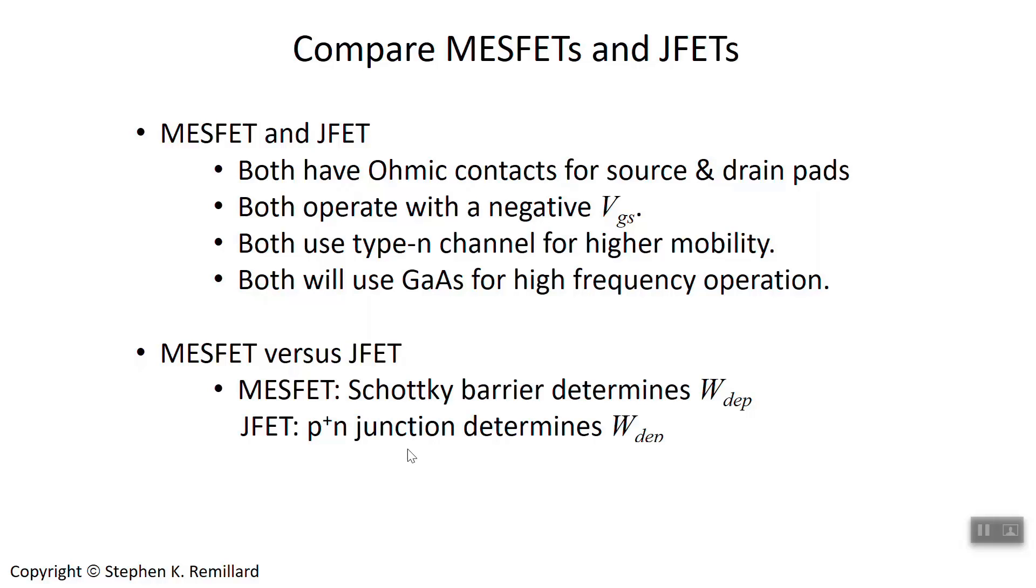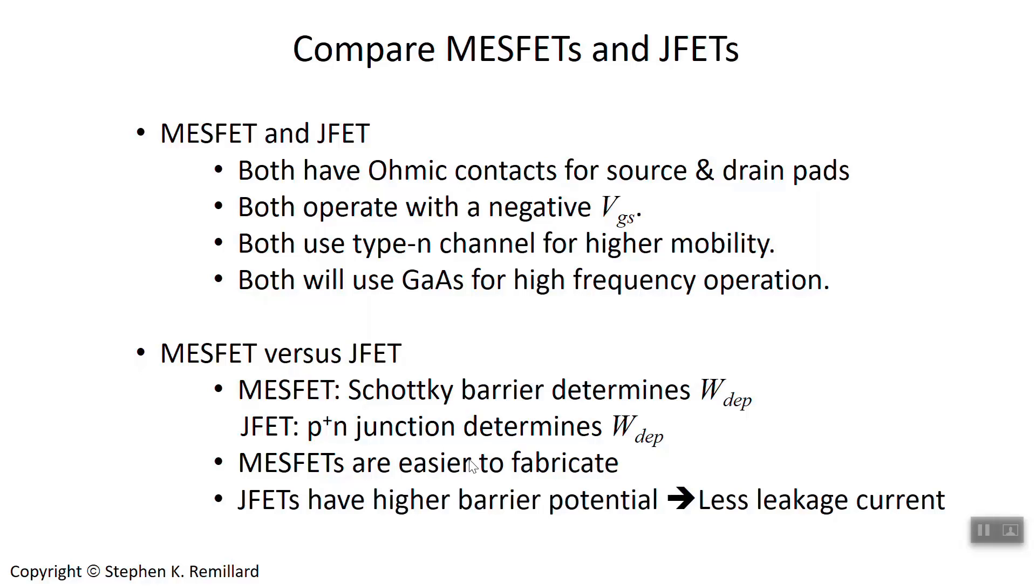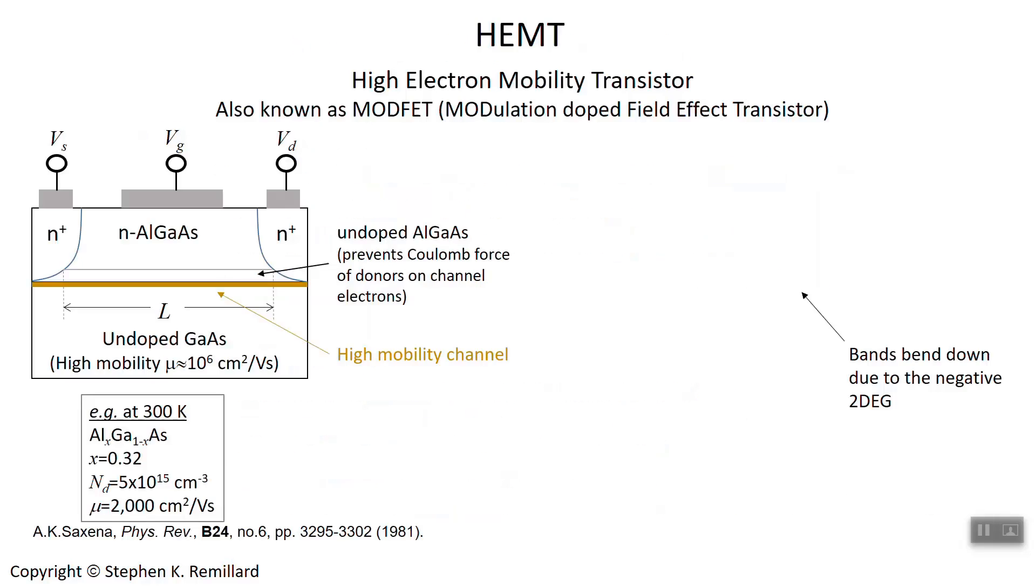They're different in that the JFET was an actual PN junction, and that's what determines the depletion thickness, as opposed to the MESFET, where it's a Schottky barrier diode that determines the depletion thickness. In terms of manufacturability, MESFETs are easier to fabricate, and the JFETs have the benefit of having a much higher barrier potential, and hence less leakage current. So in the off state, they're not dissipating, and they also switch very quickly. So that's MESFETs.